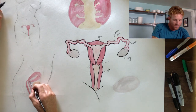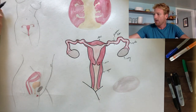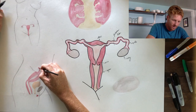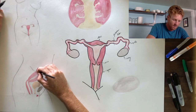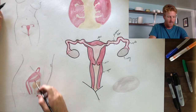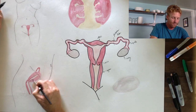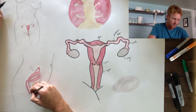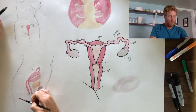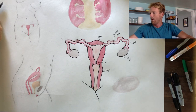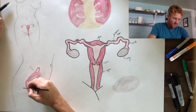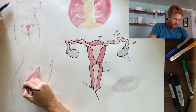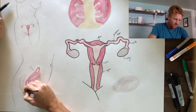In this view we can't really see the right fallopian tube, but we can definitely see the left — and that left fallopian tube extends out, wraps around, and connects to the left ovary, which in this situation is sitting behind the uterus. As we go backwards, the rectum is going to be situated just posterior to the vagina, and that connects to the anus.